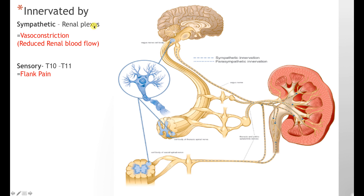The sympathetic innervation of the kidney comes from the renal plexus, whose function is to induce vasoconstriction. The renal plexus receives branches from the celiac and aortic plexuses, as well as branches of the lumbar and thoracic splanchnic nerves. This vasoconstriction leads to reduced renal blood flow, which in turn increases blood pressure. Sensory output from the kidney goes to the 10th and 11th thoracic vertebrae — these are the dermatomes responsible for the characteristic flank pain associated with kidney stones.